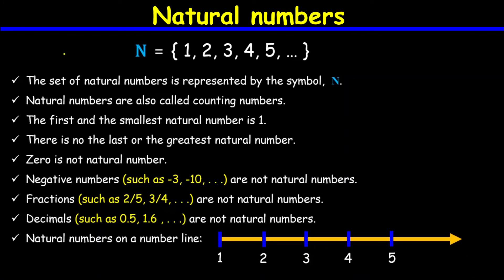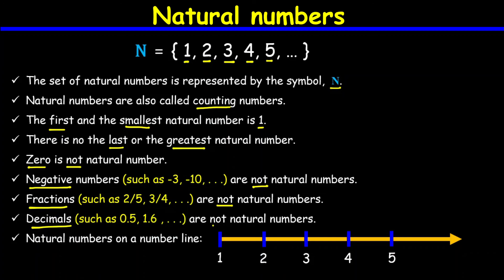Let's summarize what we discussed in this lesson. Natural numbers are 1, 2, 3, 4, 5, and so on — they are infinite. The set of natural numbers is represented by capital letter N. Natural numbers are also called counting numbers. The first and smallest natural number is 1, but there is no last or greatest natural number. Zero, negative numbers, fractions, and decimals are not natural numbers.